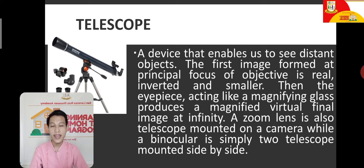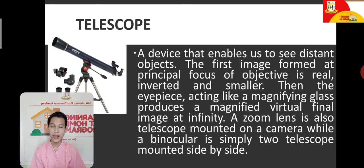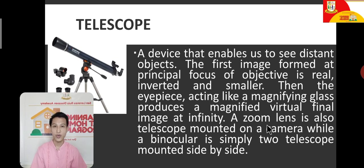Next is the binocular, used for observation in the military, bird-watching, and many other applications. A binocular is essentially a telescope mounted side by side. So these are the different types of optical instruments — though there are many more, the basic ones are the camera, microscope, and telescope.